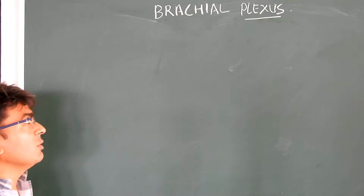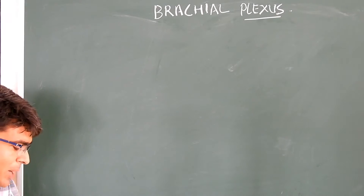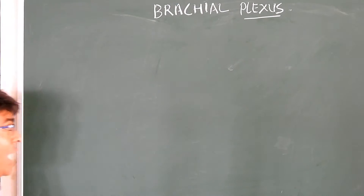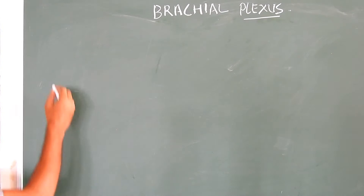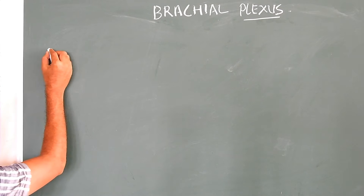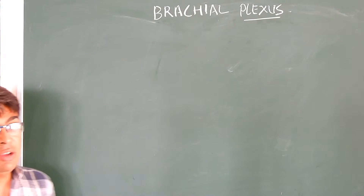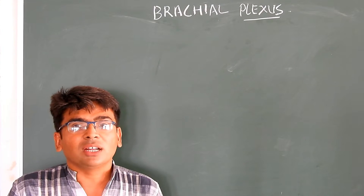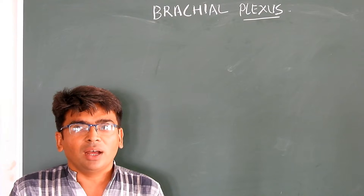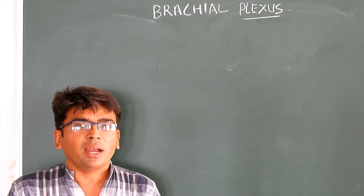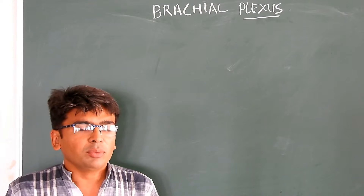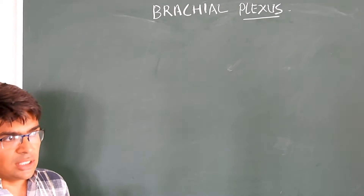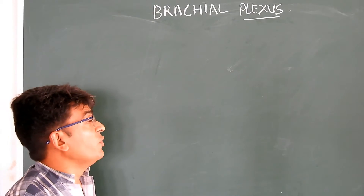The brachial plexus is formed by C5 to T1 — from the fifth cervical segment up to the first thoracic segment of the spinal cord.